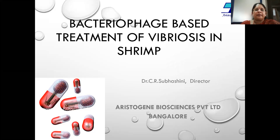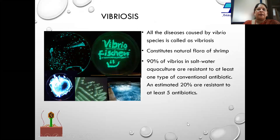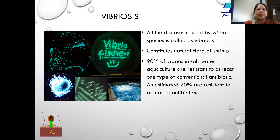Good afternoon. Today we are going to discuss the control of vibriosis in shrimp aquaculture using bacteriophages. Vibriosis is a notorious pathogen of shrimp aquaculture; although it is a common microflora of shrimp aquaculture, under stressful conditions it can cause mass mortalities.